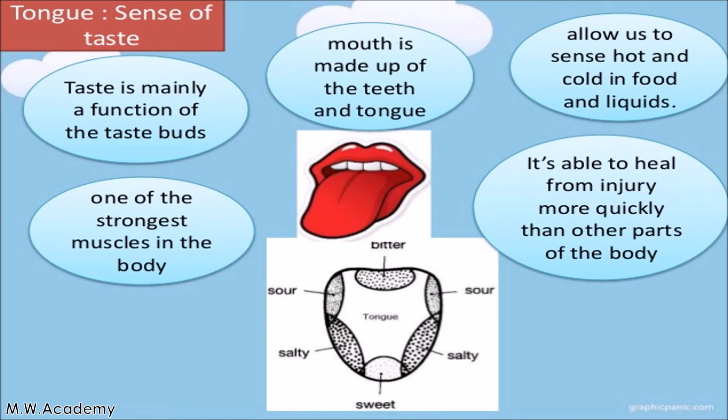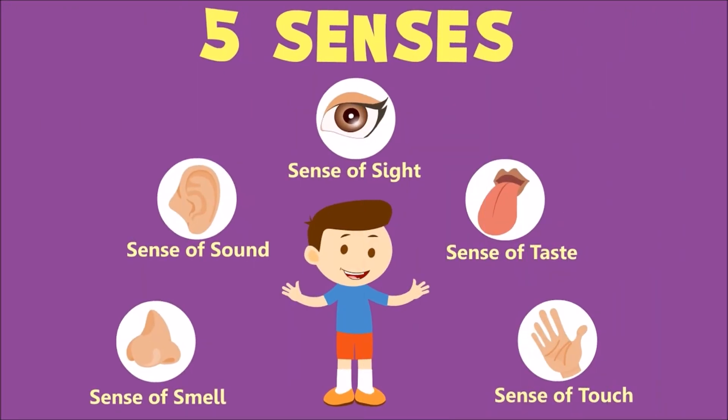So students, in today's class we discussed the five sense organs: eyes which give us a sense of sight, nose which gives us a sense of smell, ears which give us a sense of hearing, skin which gives us a sense of touch, and tongue which gives us a sense of taste. In the next class, we will study these sense organs in detail. Your work is to read about these sense organs in your book.